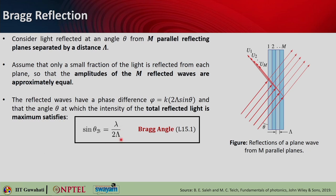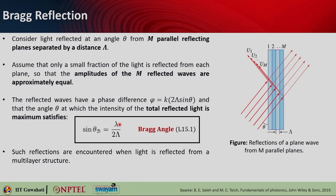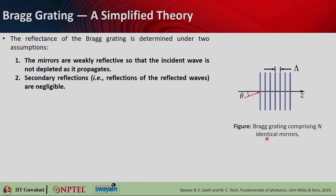Sin theta_b is given as lambda over 2 capital lambda, where capital lambda is the spacing between mirrors and small lambda is the wavelength of light. Such reflections are encountered when light is reflected from a multilayer structure, where theta is defined with respect to the parallel planes. The reflectance of a Bragg grating is determined under two assumptions: the mirrors are weakly reflective so the incident light is not depleted, and secondary reflections of the reflected waves are considered negligible because the first reflected wave itself is already weak.